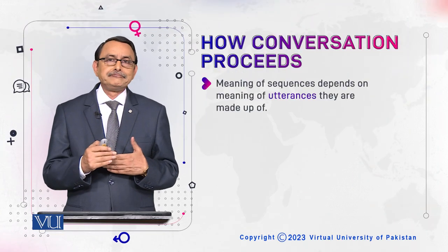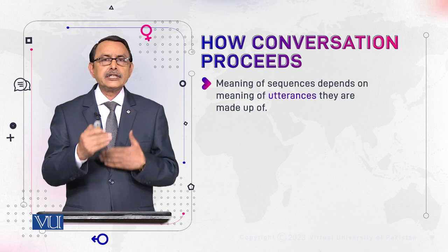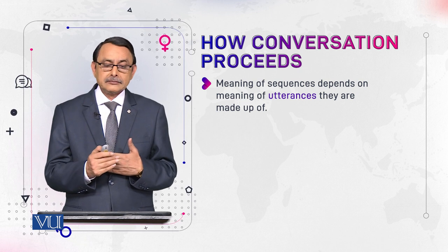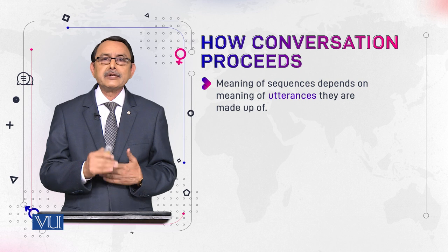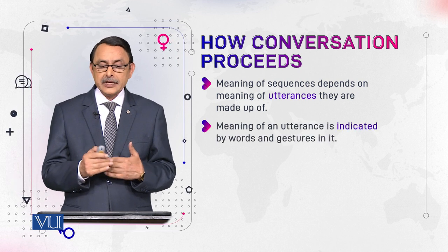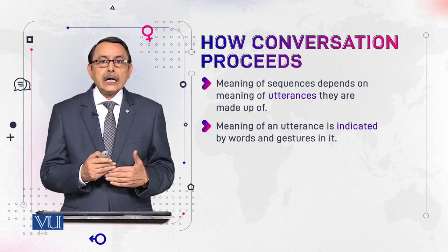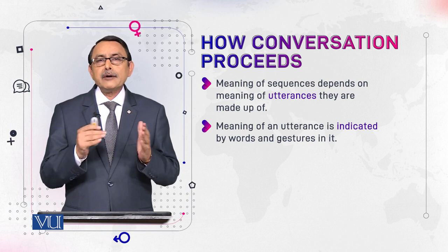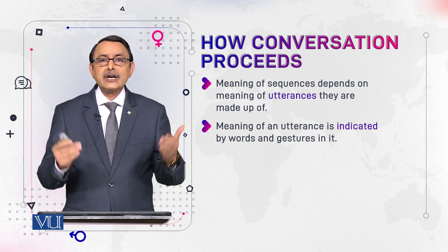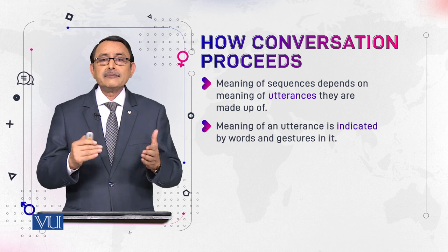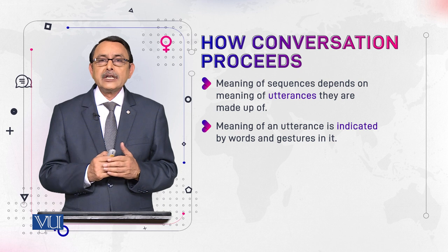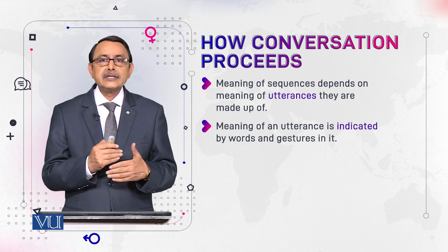This module will introduce you to the process of conversation. Sequences are ordered terms we have already defined. The meaning of sequences depends on utterance meaning. The meaning of an utterance is indicated by words or the gestures which accompany the words — for example, moving hands and facial expressions which accompany speech. All these things determine the meaning of utterances, and the meaning of utterances determines the meaning of sequences.